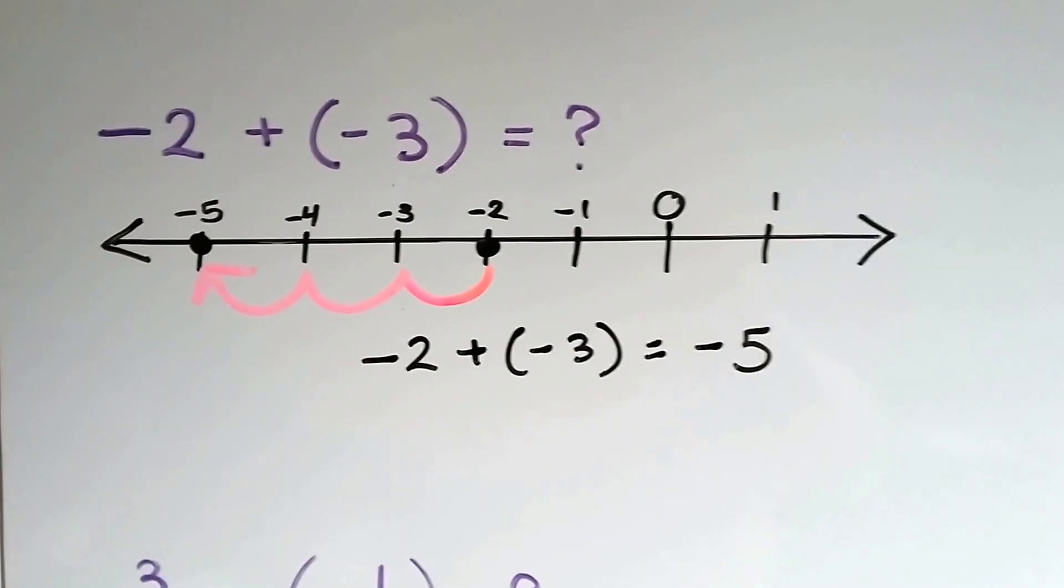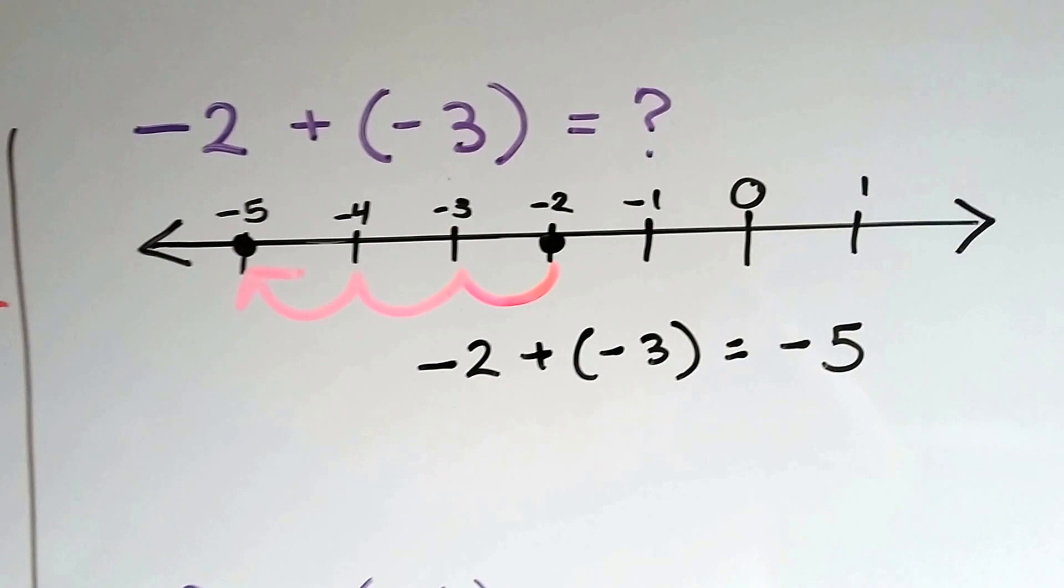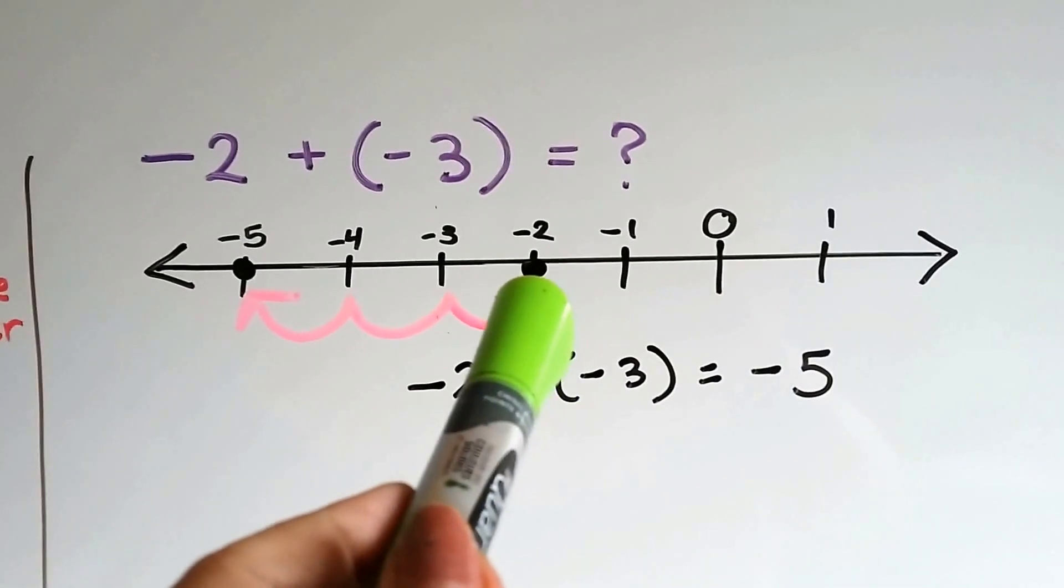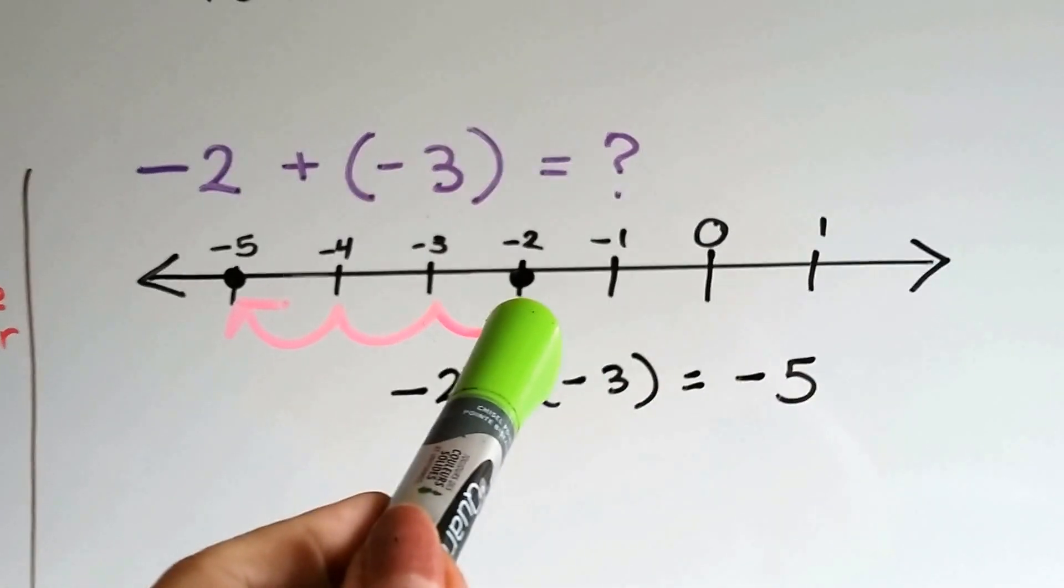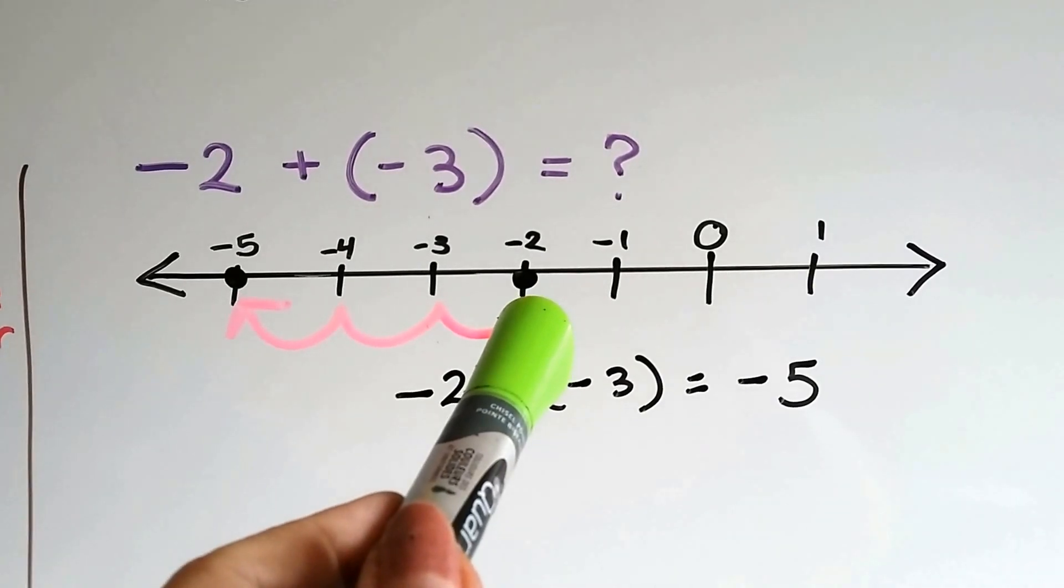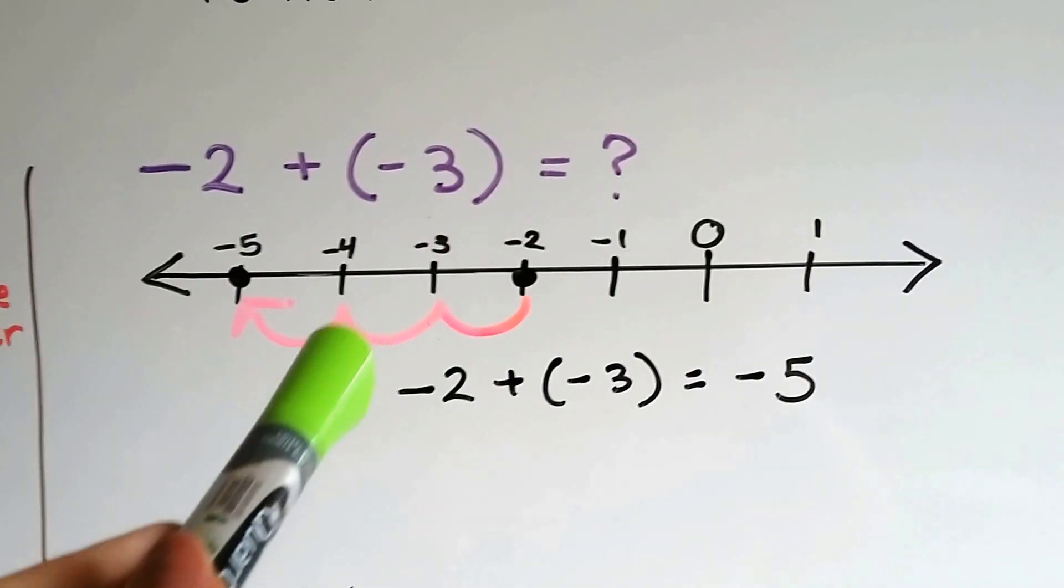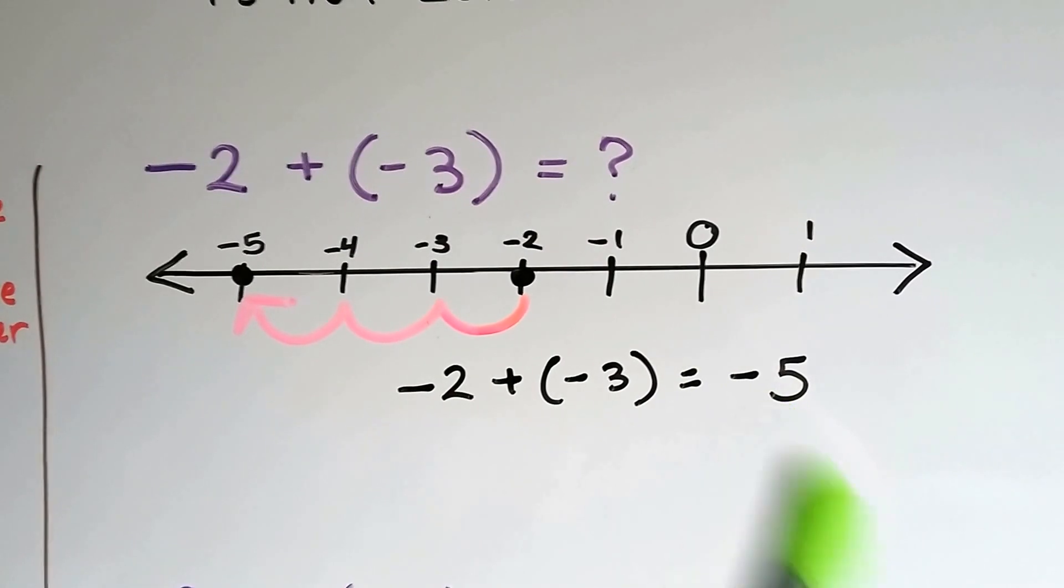What if we had negative 2 plus negative 3? Well, we start with negative 2 on our number line right here. Here's our 0. Here's our negative 2. And we're going to add negative 3. 1, 2, 3. That's going to get us negative 5.